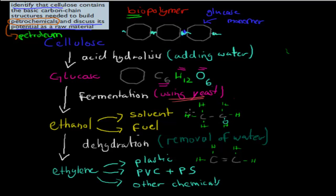Ethanol is essentially ethylene with hydroxide groups attached — these are the alcohol groups. The '-ol' suffix in ethanol comes from the alcohol group, which is the hydroxide group attached here. The good thing about ethanol is that if we can produce it, we can make things like fuel for cars.